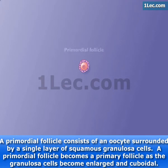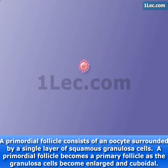A primordial follicle consists of an oocyte surrounded by a single layer of squamous granulosa cells. A primordial follicle becomes a primary follicle as the granulosa cells become enlarged and cuboidal.